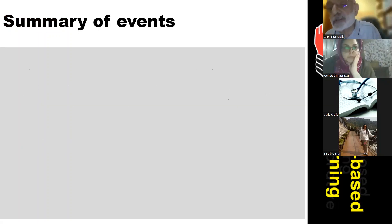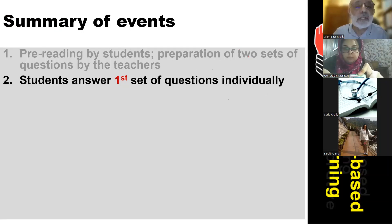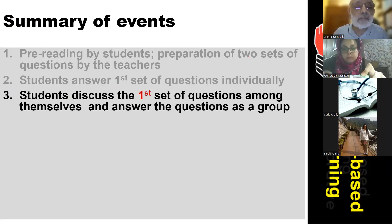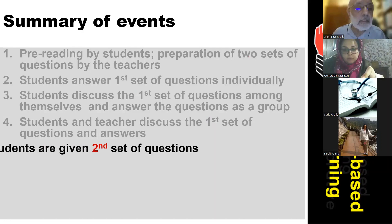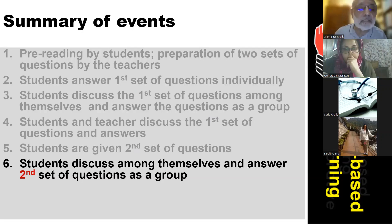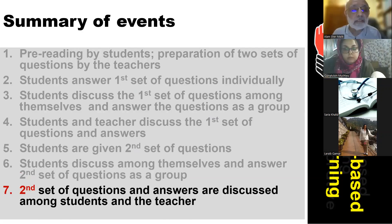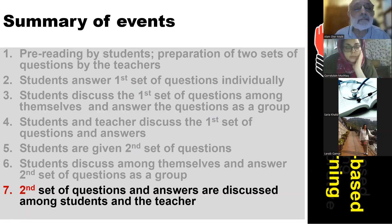In summary, the TBL process consists of: pre-reading by students; preparation of two sets of questions by the teacher; students answer the first set individually; students discuss the first set as a group; students and teacher discuss the first set together; students are then given the second set; students discuss and answer the second set as a group; and finally the second set of questions and answers are discussed by students and the teacher together.